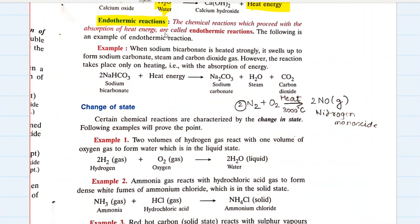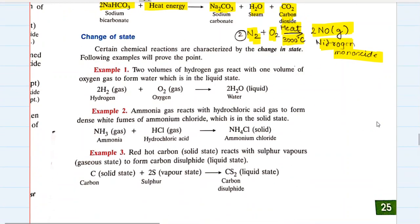Endothermic reactions are the opposite of exothermic reactions — they proceed with the absorption of heat energy. Example: when sodium bicarbonate is heated strongly, it absorbs heat and decomposes to form sodium carbonate, steam, and carbon dioxide — the reaction takes place only on heating with absorption of energy, so it is endothermic. Another example: nitrogen plus oxygen heated at around 3000°C produces nitrogen monoxide — this also happens by absorption of heat energy, making it an endothermic reaction.